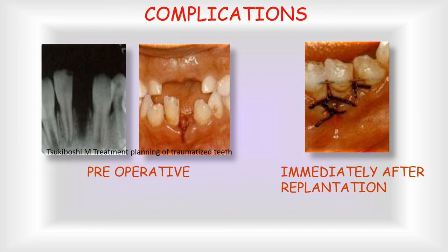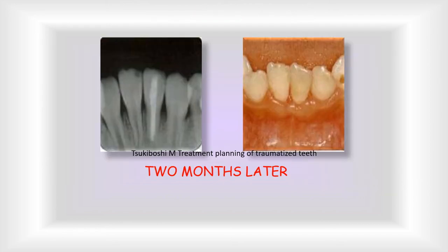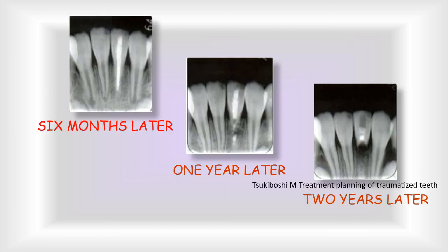The possible outcomes for a re-implanted tooth are either ankylosis or root resorption. Ankylosis was discussed in the previous case. Now we will talk about root resorption. Here is a case — you can see there is a lost tooth, with the space visible on X-ray, and the clinical picture shows a socket and torn gingiva. The tooth was re-implanted back in the socket; sutures and a splint were given to stabilize it. After two months, the radiograph showed no pathology, and clinically the tooth was well adapted with healthy gingiva. Six months later, root resorption had started in the apical area. One year later, the radiograph revealed more severe root resorption. Two years later, most of the root had resorbed and only the crown portion remained standing.